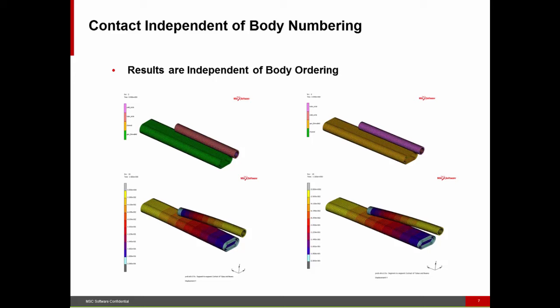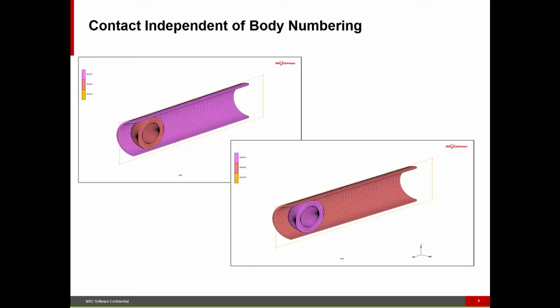I'll demonstrate these in two different models. We have exactly the same physical problem on the left and the right, but we reorder from a user's perspective what the bodies are — you can see they have different colors. When we run the simulation, we get exactly the same results, accurate to four digits.